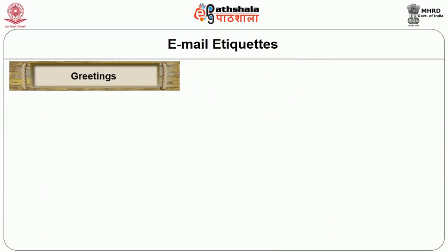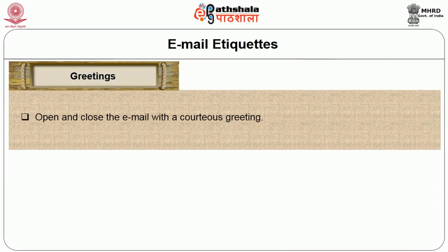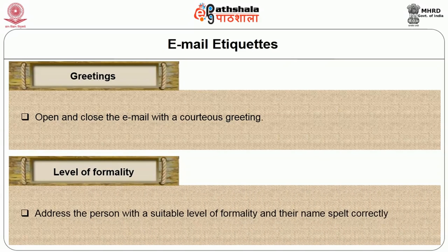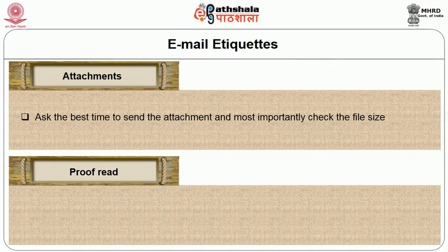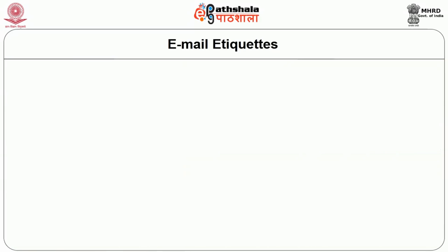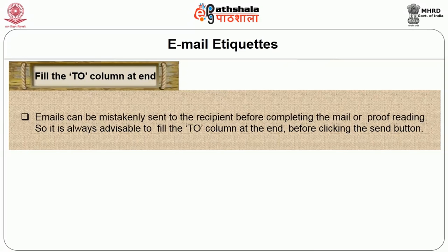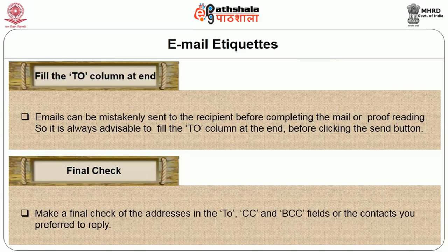Open and close the email with courteous greetings. Level of formality — address the person with a suitable level of formality and their name spelled correctly. Attachments — ask the best time to send the attachment and most importantly check the file size. Proofread — mistakes in the email never go unnoticed by the recipient. Fill the 'To' column at the end — emails can be mistakenly sent before completing or proofreading, so always fill the 'To' column last before clicking the send button. Make a final check of the addresses in the To, CC and BCC fields.